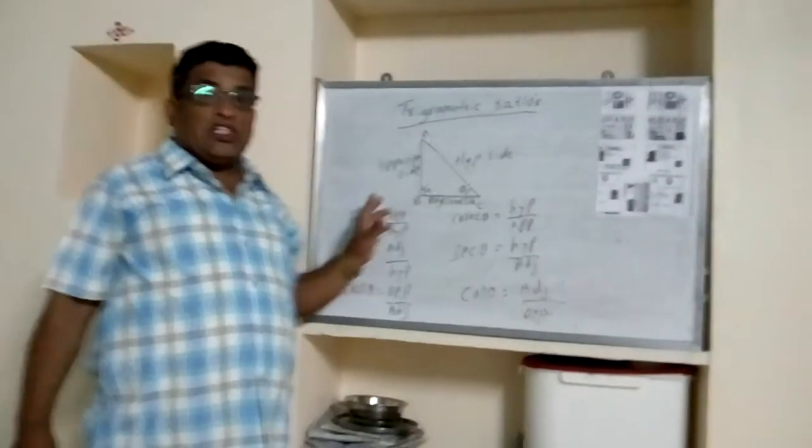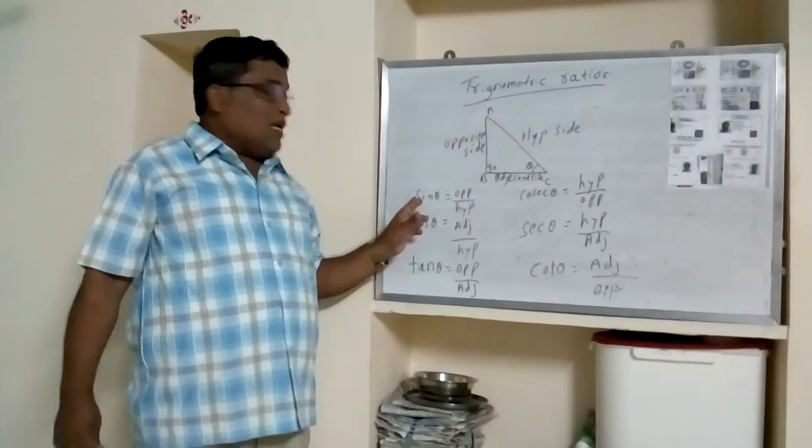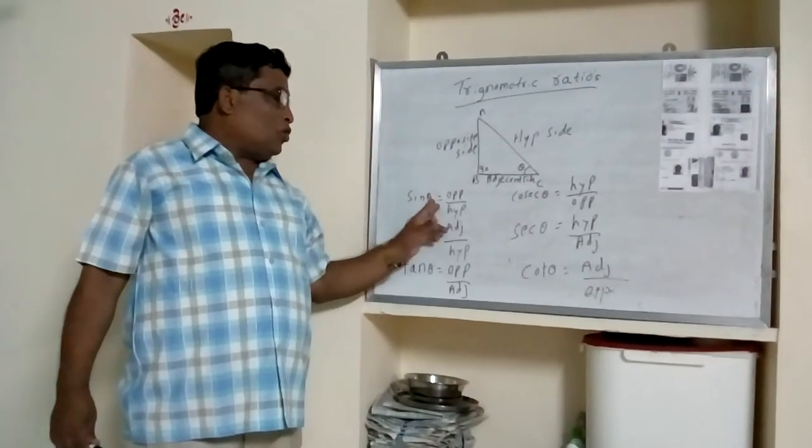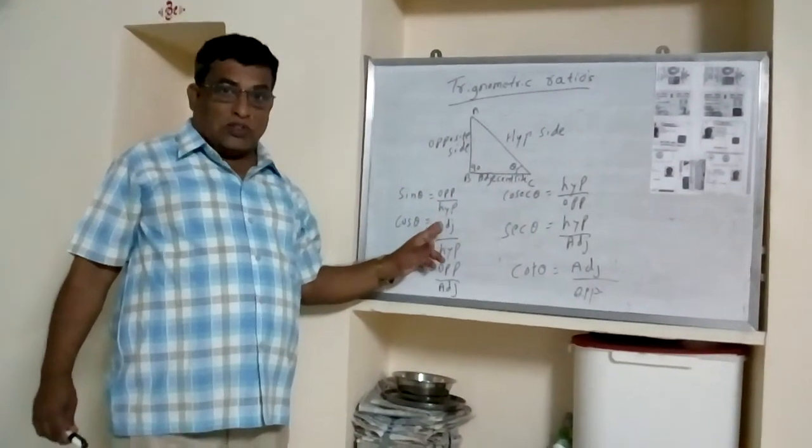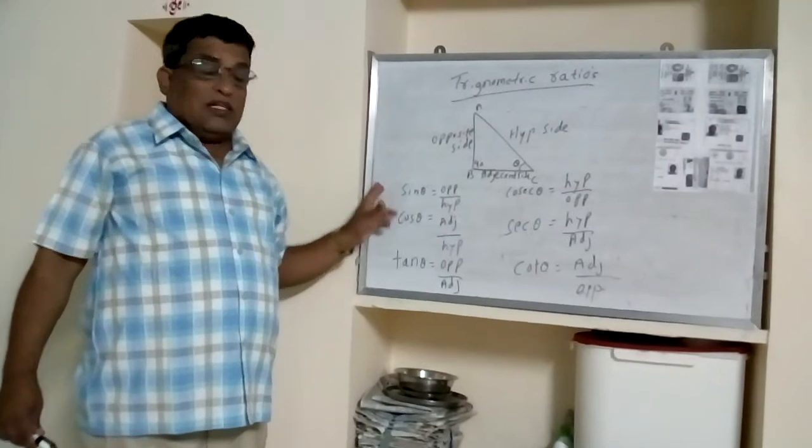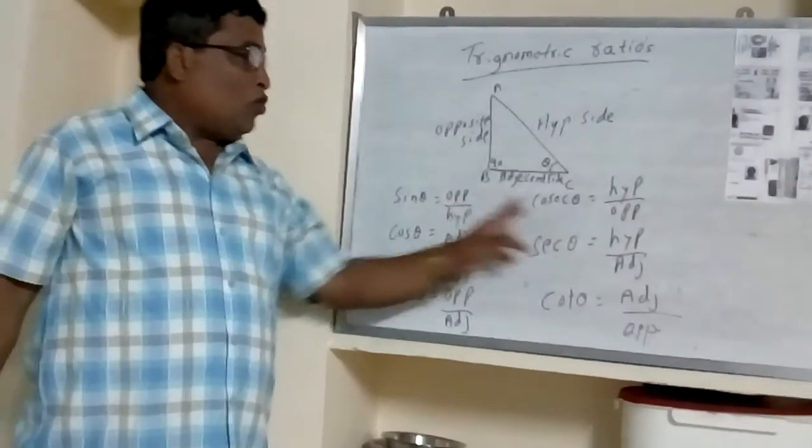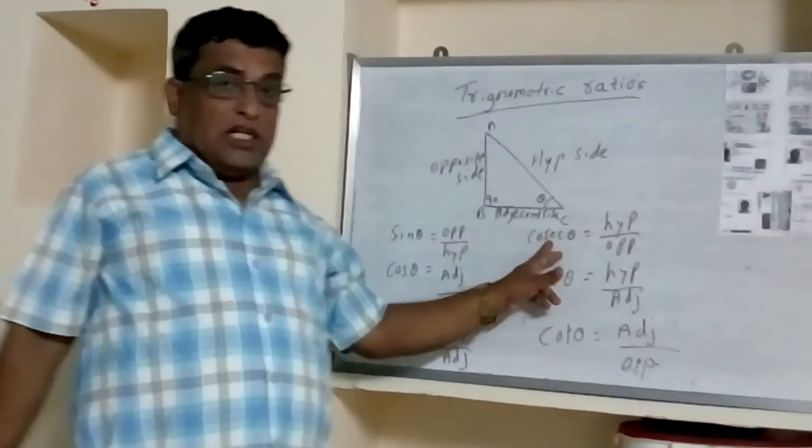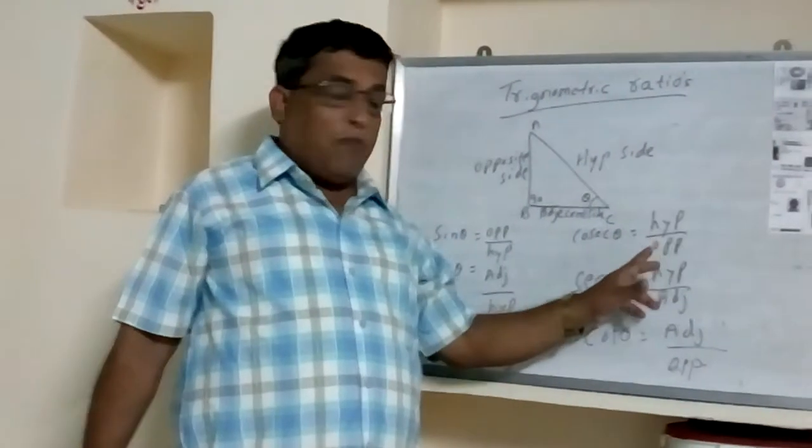There are 6 trigonometric ratios. Sin θ equals opposite side by hypotenuse side. The reciprocal of sin θ is cosecant θ. Cosecant θ equals hypotenuse side by opposite side.